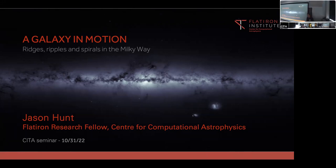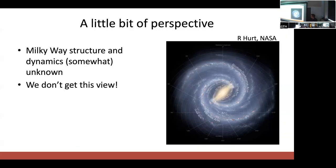It's nice to see so many familiar faces in the audience. For those of you who don't know me, I'm Jason Hunt from the CCA, mainly working on galactic-scale astrophysics, both with large survey data but also with high-resolution simulations. We know the Milky Way is a barred spiral galaxy, but we certainly don't have the full view of its structure and dynamics because of our location within the disk.